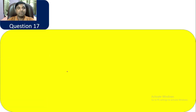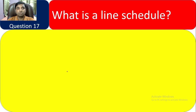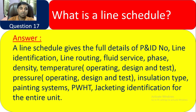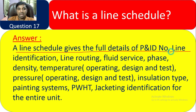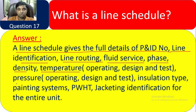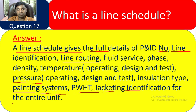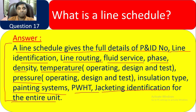Question 17: What is a line schedule? A line schedule gives full details including P&ID number, line identification number, line routing, fluid service, phase, density, temperature, painting system, PWH, jacketing identification for the entire unit.